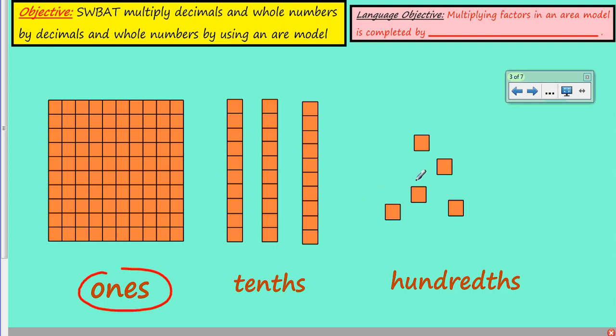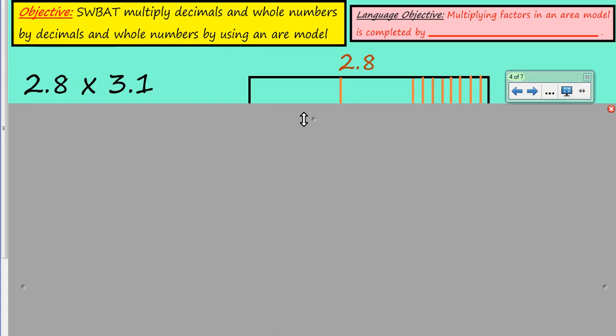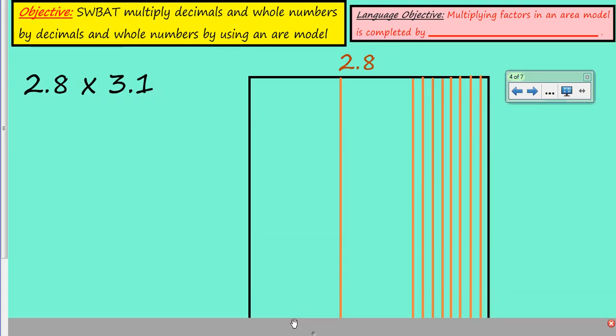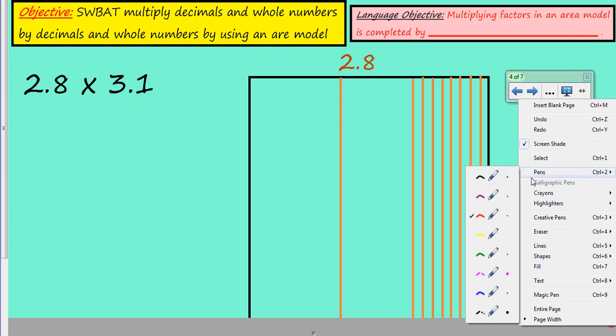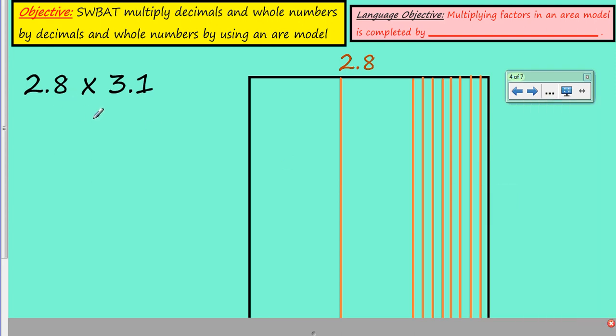We would call these tenths, not tens but tenths, because ten of these would make up that one whole. Then finally, those little tiny squares making up each tenth would equal hundredths. This is how we're gonna rename them for this activity.